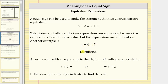An equal sign can also indicate a calculation. An expression with an equal sign to the left or right indicates a calculation, as we see here. We have five plus two equals blank, or blank equals five plus two. In this case, the equal sign indicates to find the sum.